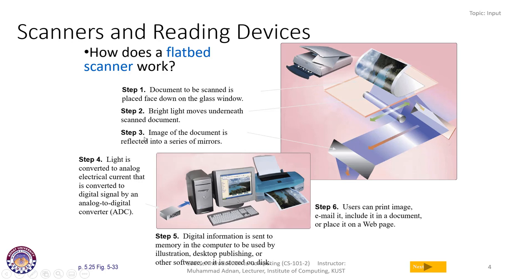In step three, the image of the document is reflected into a series of mirrors. In step four, light is converted to an analog electrical current, which is then converted into digital signals by an analog-to-digital converter (ADC). In step five, digital information is sent to the memory in the computer to be used by illustration, desktop publishing, or other software, or stored on disk. In step six, the user can print the image, email it, include it in a document, or place it on a page.